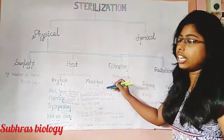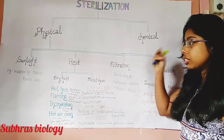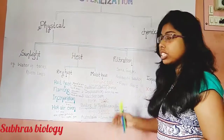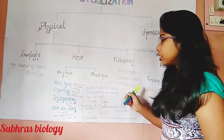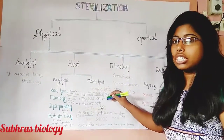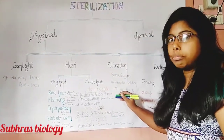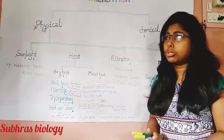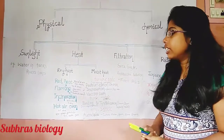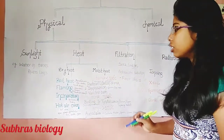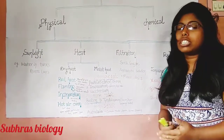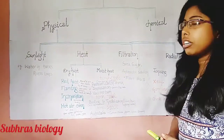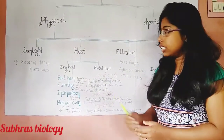Next is moist heat sterilization, divided into three types: below 100°C, at 100°C, and above 100°C. Below 100°C includes pasteurization of milk, which sterilizes non-sporing pathogens such as Brucella, Mycobacteria, and Salmonella. Inspissation is used for serum or egg media. Vaccine bath is used for sterilizing antibiotics or vaccines.